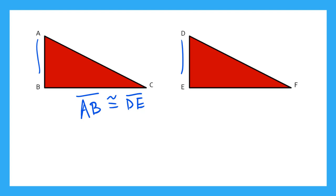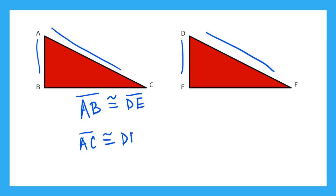Now what other sides of these two triangles do you see are the same? They have the same hypotenuse here, this long side. So I can say line segment AC is congruent and corresponding to line segment DF. And lastly, I see that I have the same base here. So I can say line segment BC is congruent and corresponding to line segment EF.